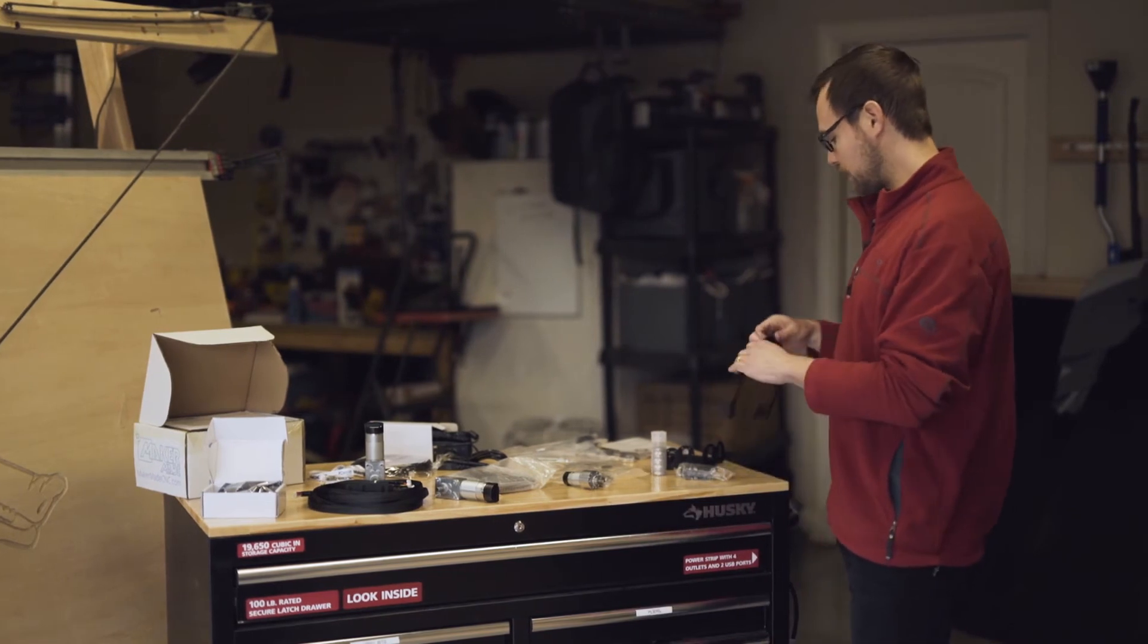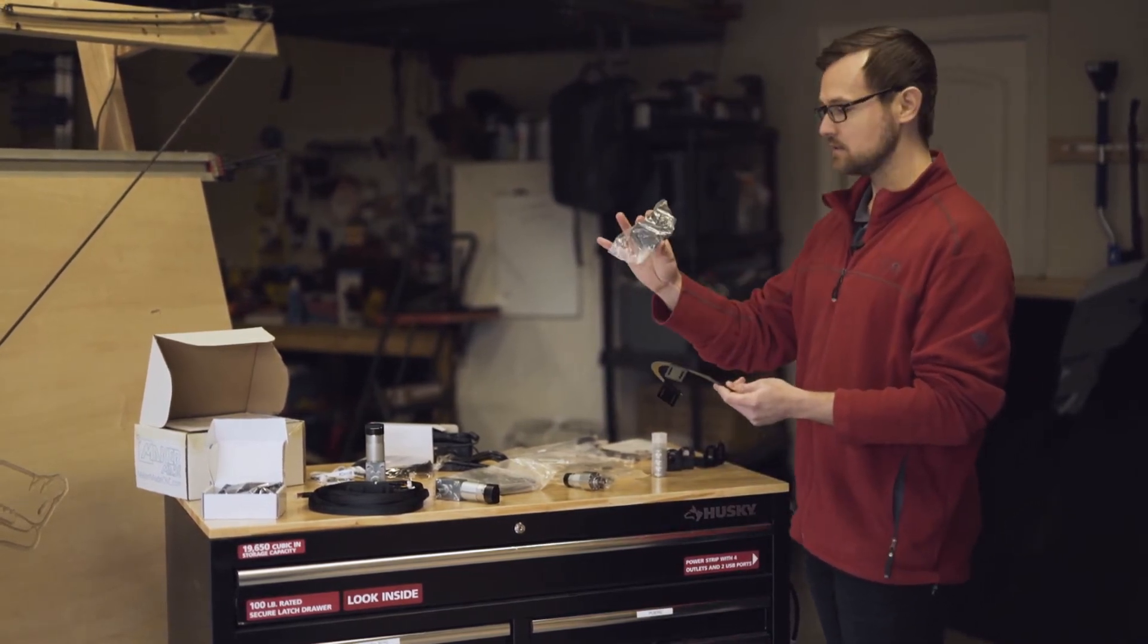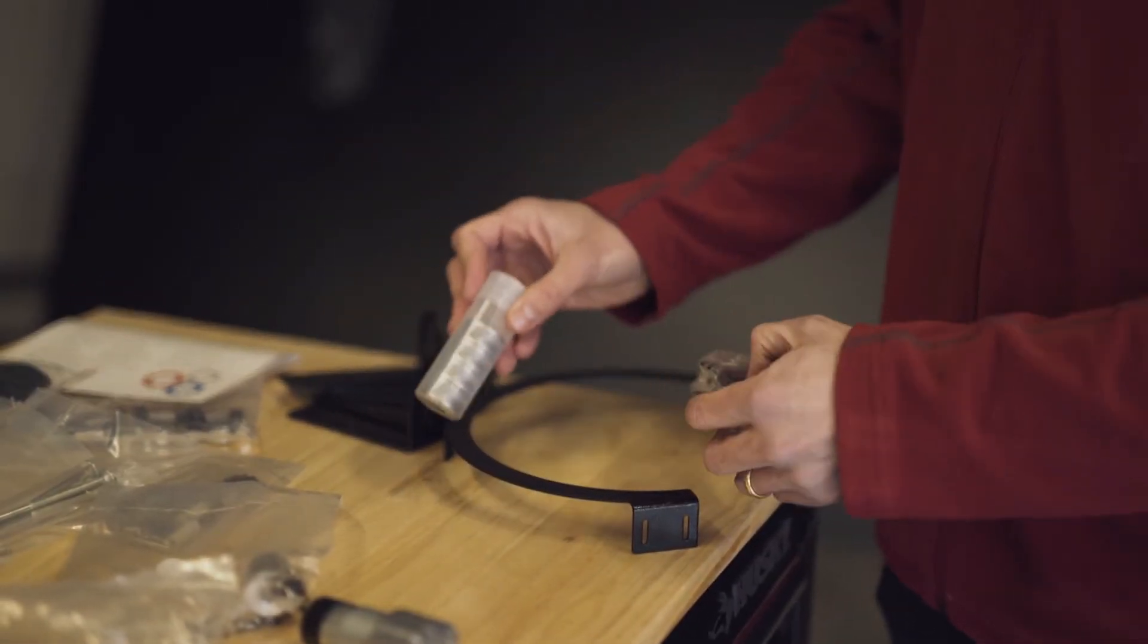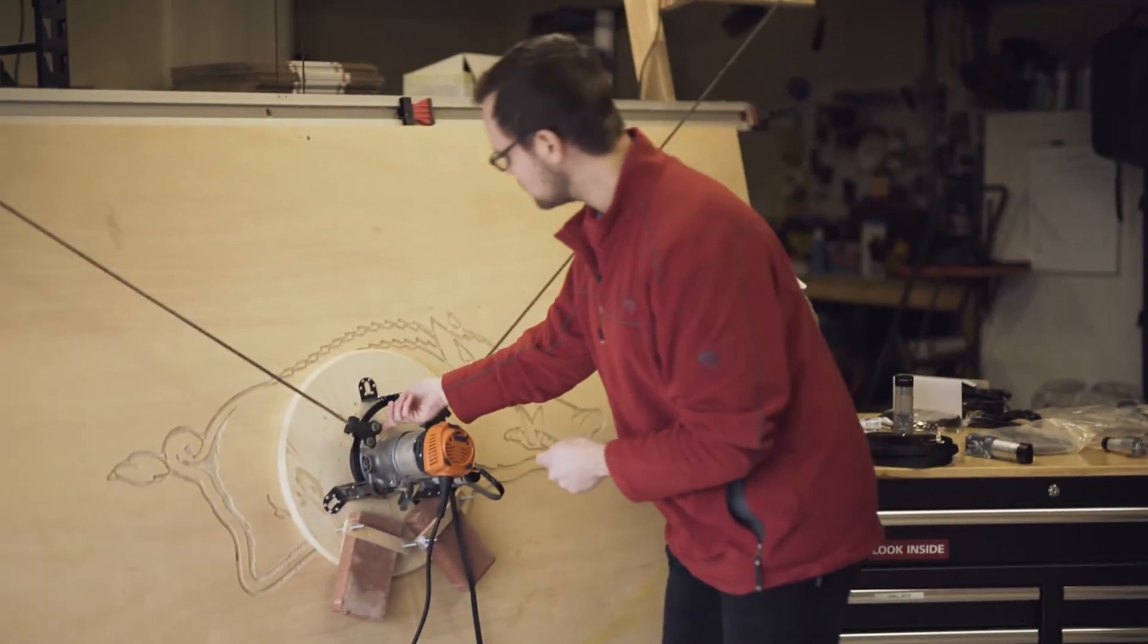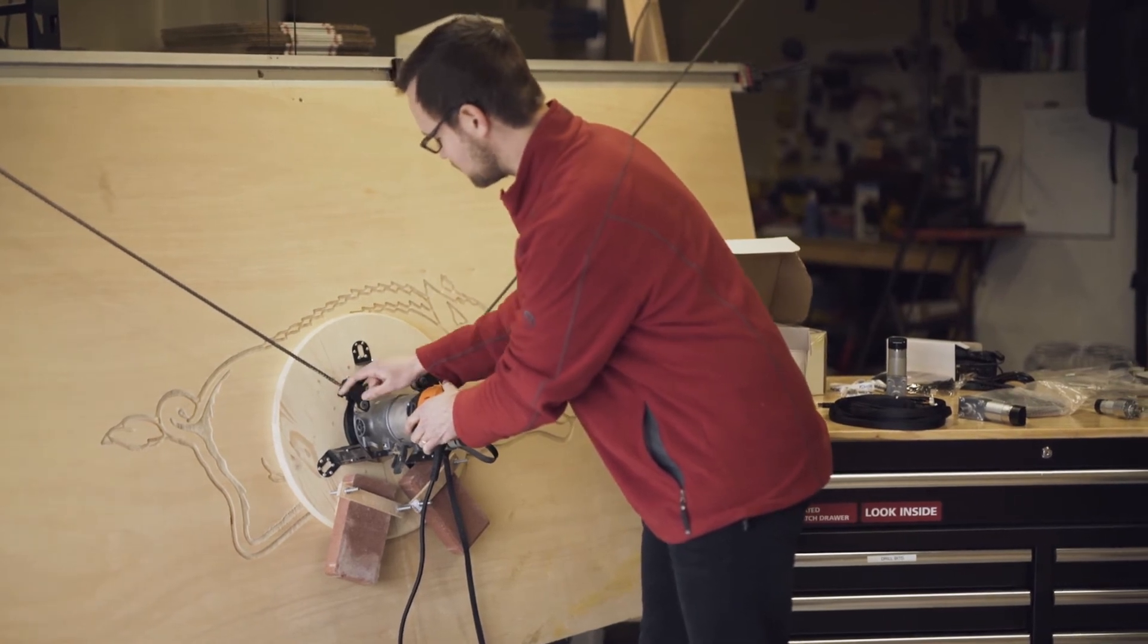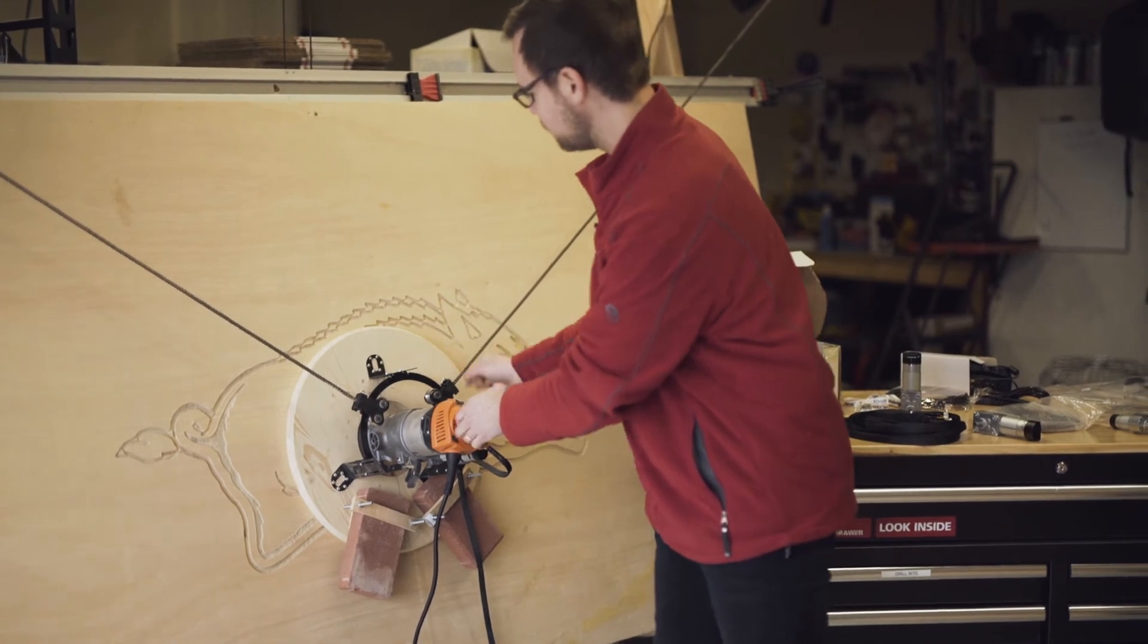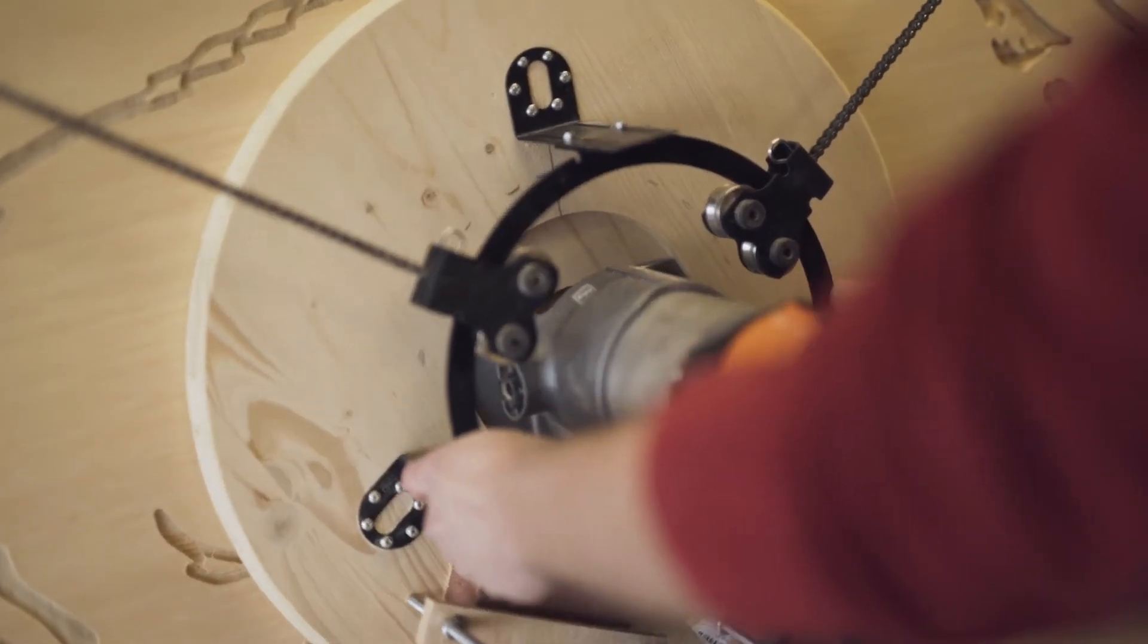So the ring here connects to these carriage brackets, which are right here, and these carriage brackets house what are called the ring bearings. Those can all be found right here. So you can see the ring bearings right here, which are what connect to the ring or to the carriage right here, which connects to the actual ring itself. And that's what allows this to slide around and ensure that it's never going to bind.